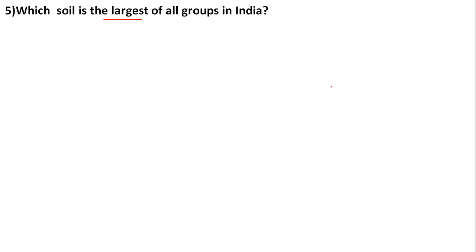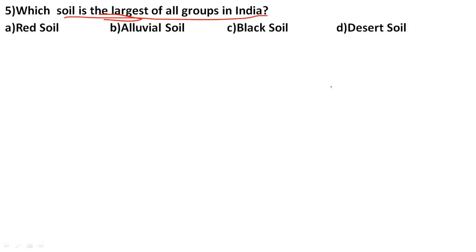Which soil is the largest group of all soils in India? Options: red soil, alluvial soil, black soil, desert soil. The correct answer is B, alluvial soil. Alluvial soil is very fertile and covers the largest area in India, found near river areas like the Ganga and Brahmaputra.